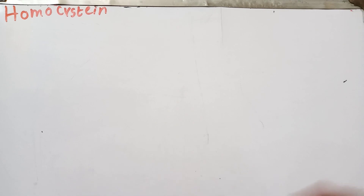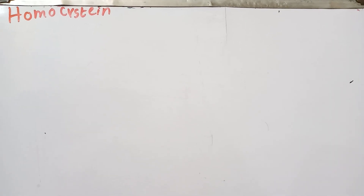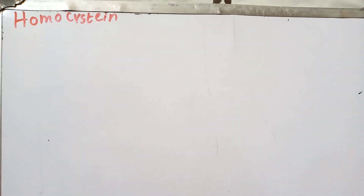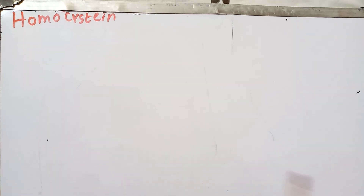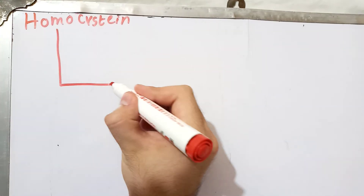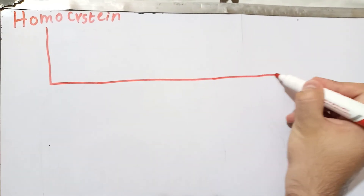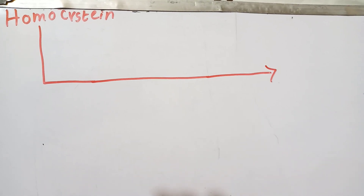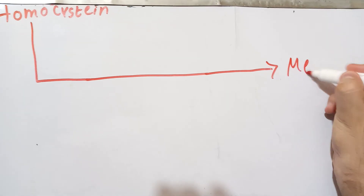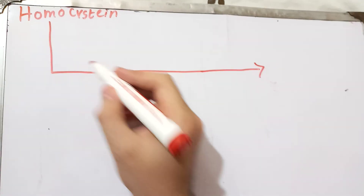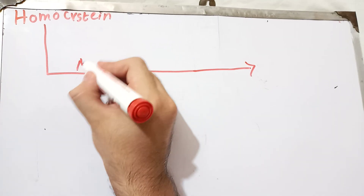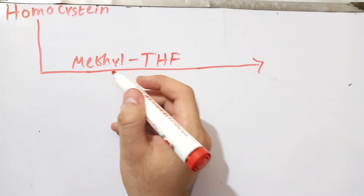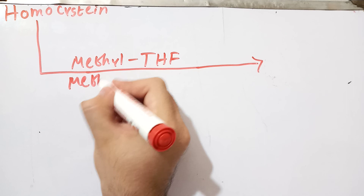Homocysteine has two fates depending on the availability of methionine in the body. If methionine is absent or deficient, homocysteine will be converted back into methionine. For this, homocysteine needs an extra methyl group, which comes from two important vitamins: folic acid in the form of methyl tetrahydrofolate, and vitamin B12 in the form of methyl cobalamin.